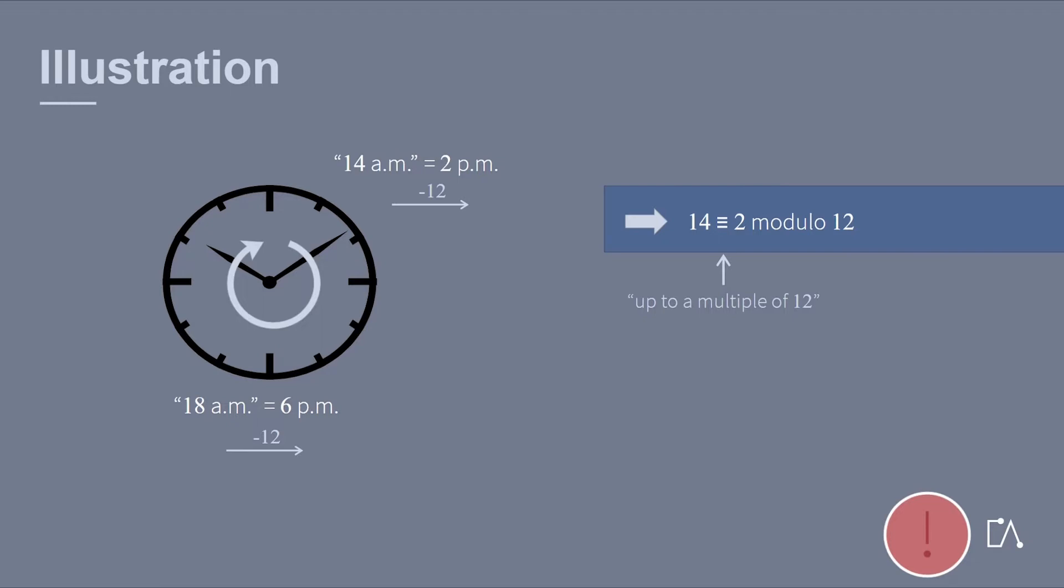Mathematically speaking, we say that 14 equals 2 modulo 12. To better separate this from a common equality, we use an equal sign with 3 lines. Of course, we could have more than one clock rotation, or even a backwards rotation. Hence all of those numbers are equal modulo 12.